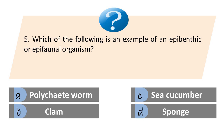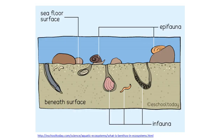Which of the following is an example of an epipelagic or epifaunal organism? A. Polychaete worm. B. Clam. C. Sea cucumber. D. Sponge. The answer is D. Sponge. Epi means upper or above. We have two types of organisms living on or beneath the seafloor surface: epifauna, which live on the surface of the seafloor, and infauna — in meaning inside or below — which live beneath the seafloor surface.